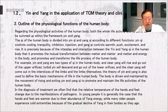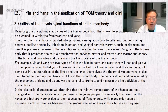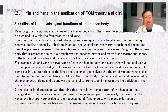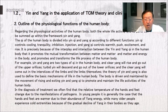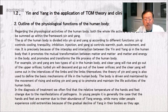For example, yin and yang are two types of qi in the human body: clear yang will rise and go out of the upper orifices, the turbid yin will descend and go out of the lower orifices, and the clear yang will come out of the interstices of the limbs. The body is driven and maintained by the movement of rising and exiting yin and yang qi. In diagnosis and treatment, the relative temperature of the hands and feet changes due to pathogenic manifestations — in young people, the hands and feet are generally warmer due to abundance of yang energy, while many older people experience cold extremities because of the gradual decline of yang as they age.